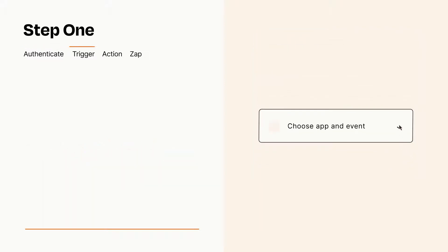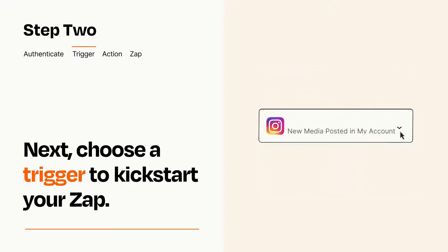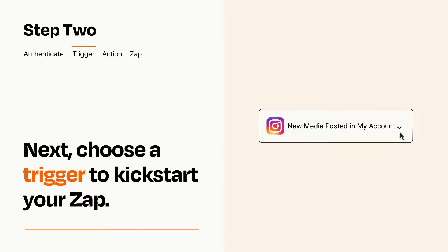Now let's set up your trigger, which is the event that starts your Zap. Pick the trigger event that you want from the list. When you set up this step, your Zap will pull in test data from your trigger app, that you'll see later when setting up your action app.